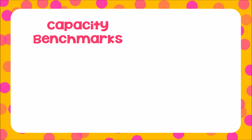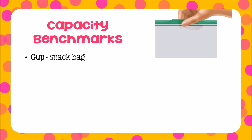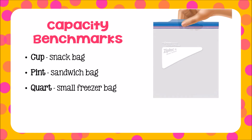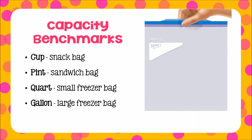Here are some other objects that can give you a benchmark or visual of what the US customary measurements look like for capacity. This snack-sized baggie has a capacity of about one cup. This sandwich bag has a capacity of one pint. This small freezer bag is called a quart bag because it has a capacity of one quart. And this large freezer bag is called a gallon Ziploc bag because it has the capacity of one gallon.